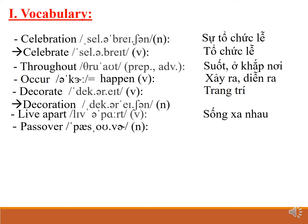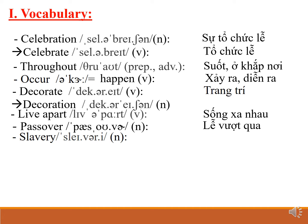Passover — it means lễ vượt qua, also called lễ quá hải. This is a special holiday of Jewish people. Slavery — it means cảnh nô lệ. Can you give me another noun? It's slave, meaning nô lệ.